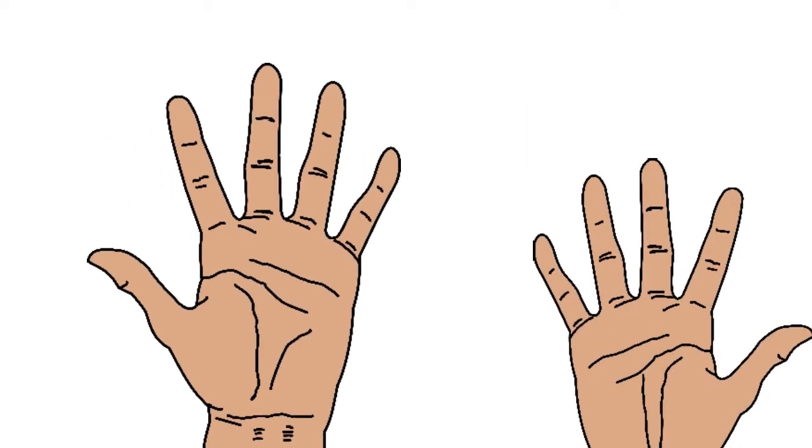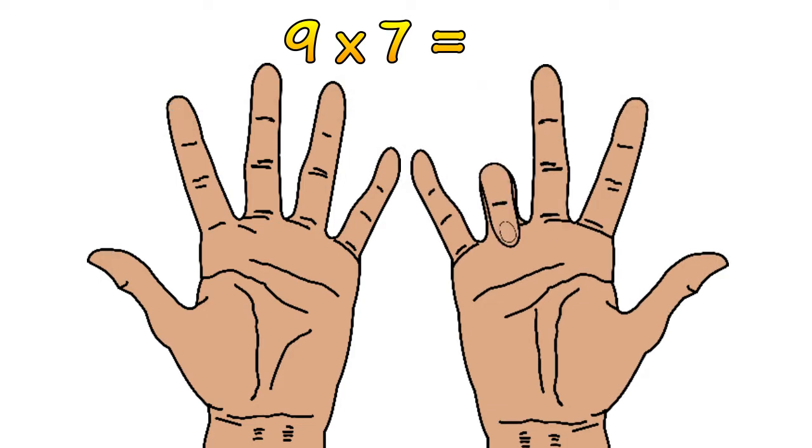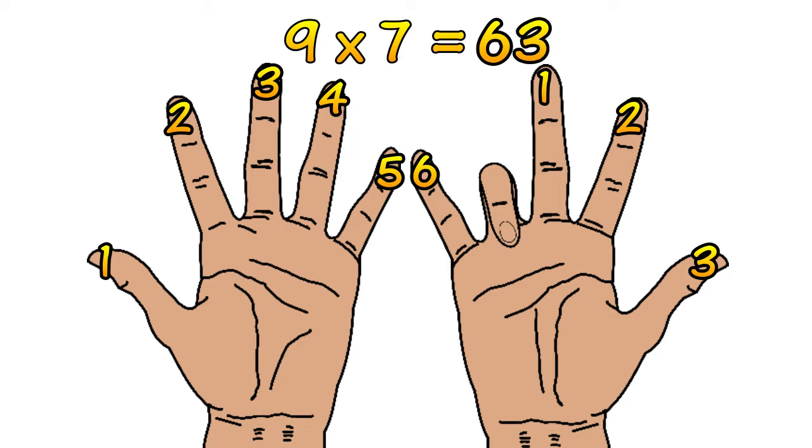Let's take a look at 9 times 7. So we find the 7th finger and we put it down. We count how many fingers there are to the left of the 7th finger. In this case there are 6. So we put that down. But we just remember it. And we count how many fingers there are to the right of the 7th finger. Which is 3 in this case. So 6 and 3 make 63. So therefore 9 times 7 equals 63.